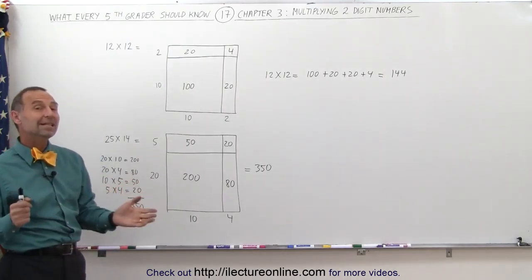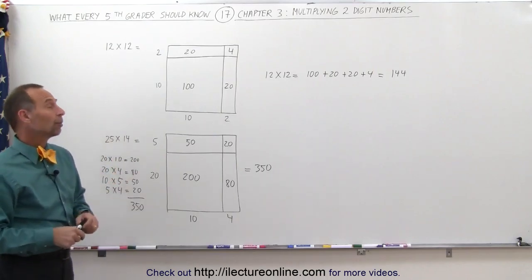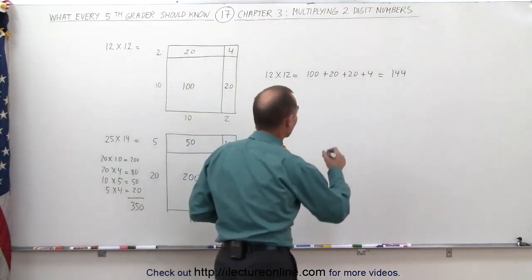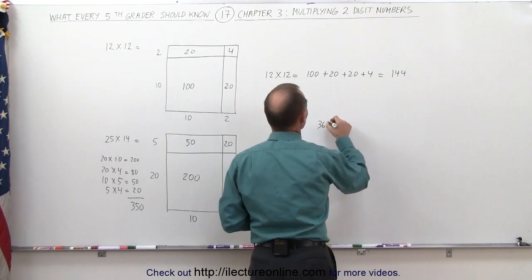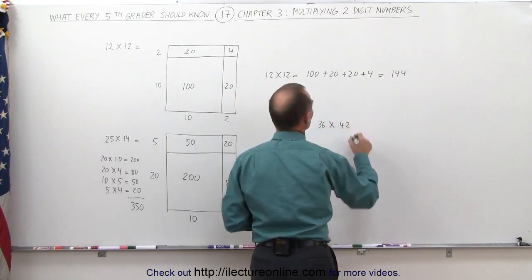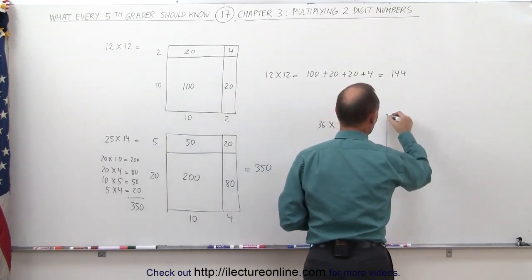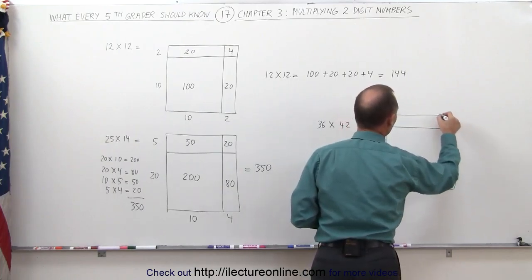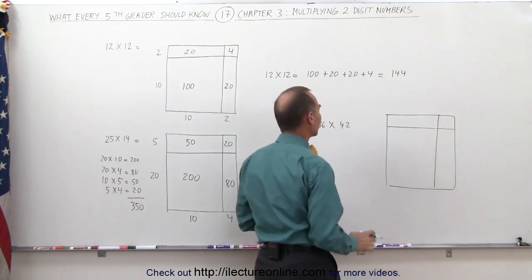So it's a really neat technique, and I would think you should practice that a number of times. For example, let's try something else. Let's try the number 36 times 42. So you make a square, draw a line here, you draw a line there, you don't really care how big those lines are.